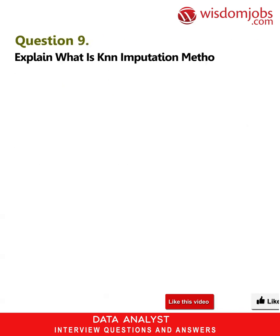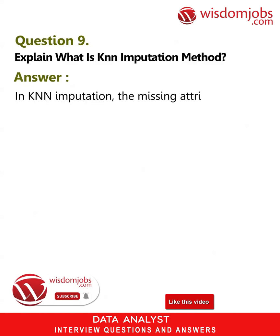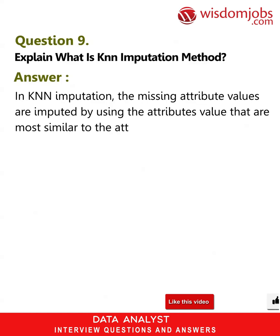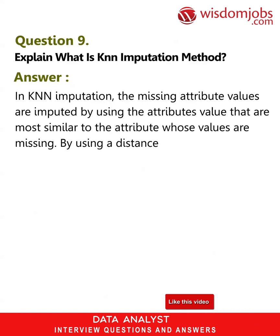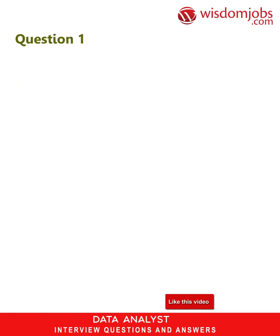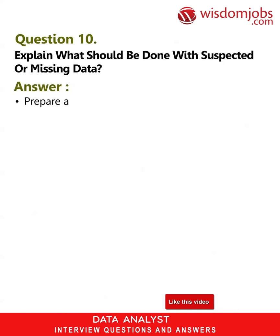Question nine: Explain the KNN imputation method. Answer: In KNN imputation, the missing attribute values are imputed by using the attribute values that are most similar to the attribute whose values are missing. Using a distance function, the similarity of two attributes is determined.